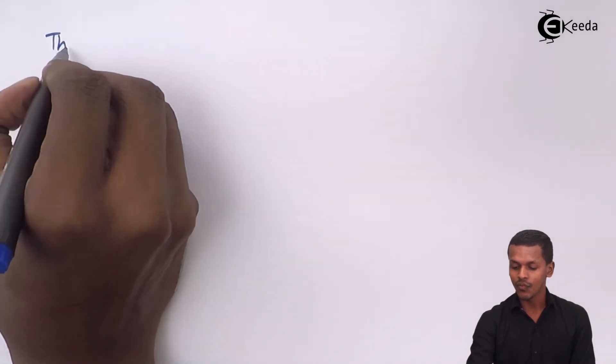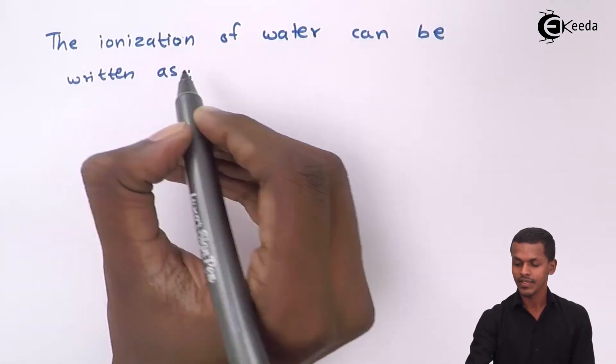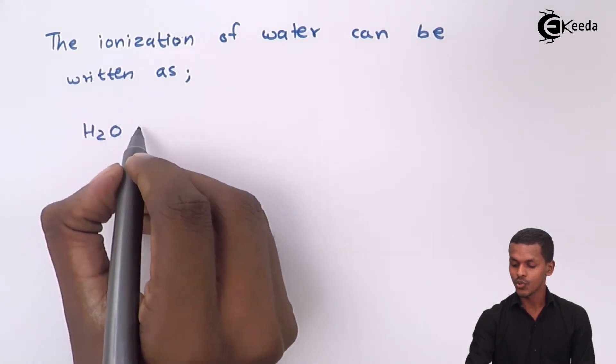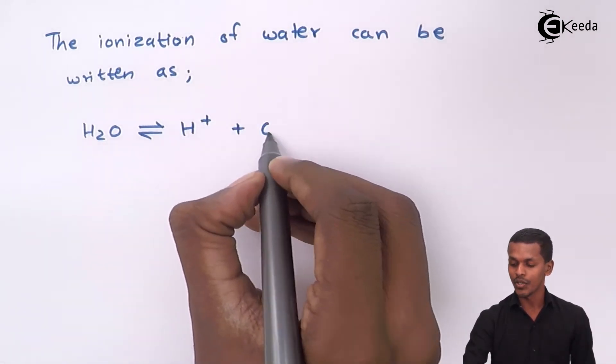Similar to a weak electrolyte — whether a weak acid or a weak base — pure H₂O does not dissociate completely. That is why we write the dissociation, or more precisely the ionization, of water. Water is ionized into H⁺ and OH⁻ ions, so we call this the ionization of water: H₂O partially ionizes into H⁺ and OH⁻.